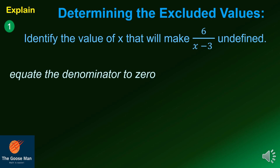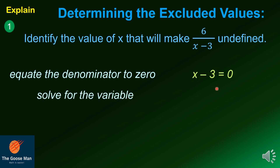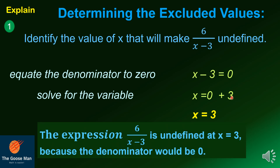Step number 1: equate the denominator to zero. Our denominator here is x minus 3, so equate that to zero. Step 2: solve for the variable — add both sides by 3, so x is equal to 3. Therefore, the expression 6 all over x minus 3 is undefined at x equals 3 because the denominator will be zero.